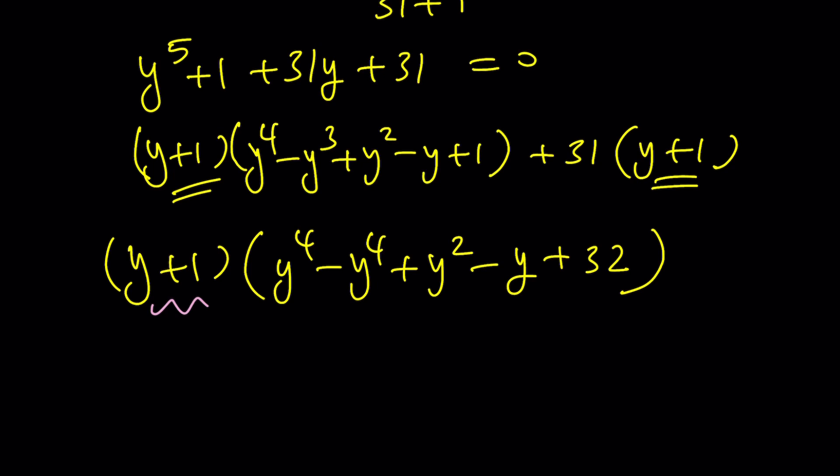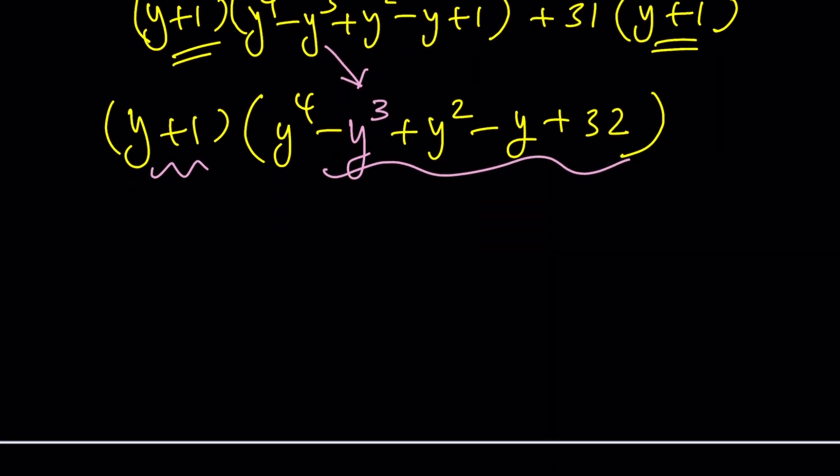We are able to get y equals negative 1 from here or x equals negative 1 half. But what about this one? That's a quartic. Sorry about that, this should be y to the third power. You can get y equals negative 1. The other one is quartic, so you need to solve it. I don't think you want to do it. Let Wolfram Alpha do that for you. But that's the main idea.